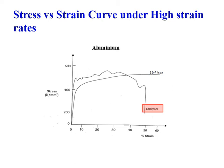Similarly for aluminum, the yield strength is higher at 1300 per second strain rate compared to 10^-3 per second. So always remember: for higher strain rates, we obtain higher yield strength. When we plot the stress-strain curves, the level of the curve under higher strain rate will always be on the higher side than the curve plotted for slow loading.